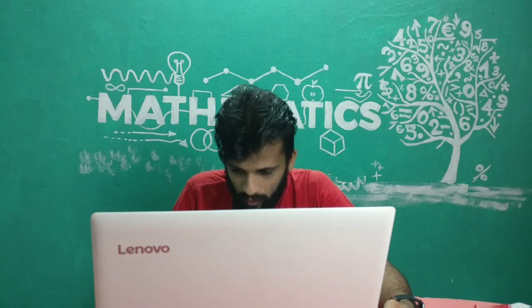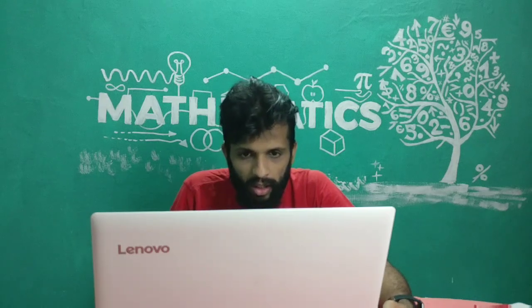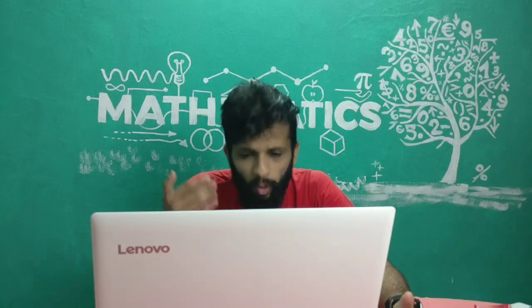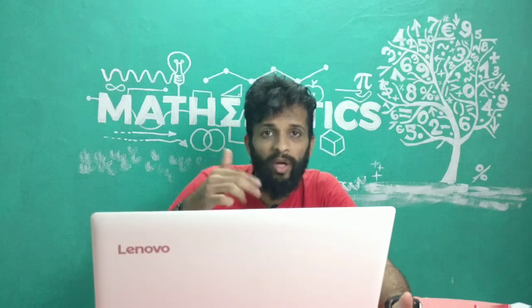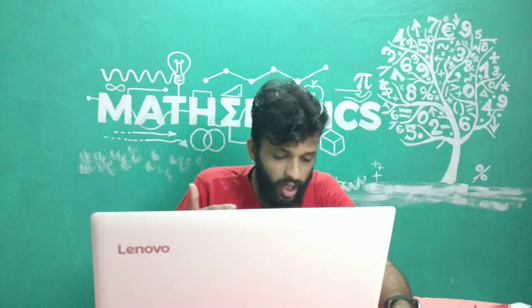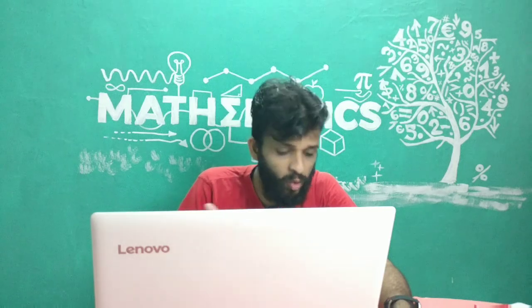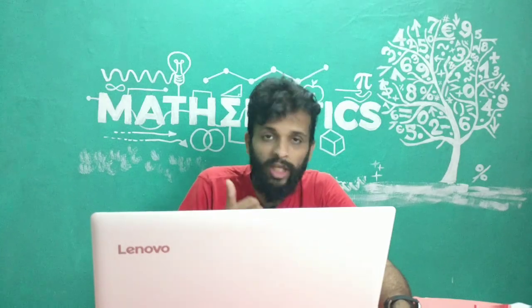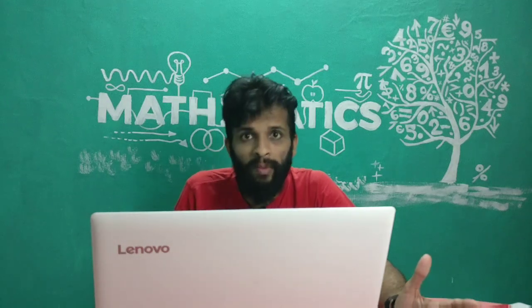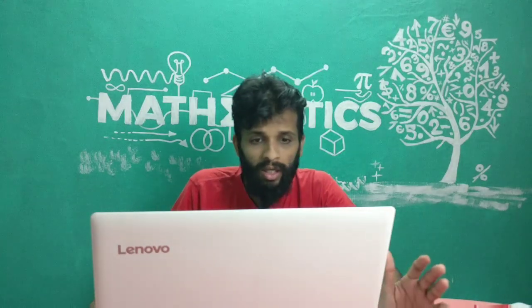Question 4d is about ogive curves — specifically a more-than type ogive. For the more-than type, subtract from the total to get cumulative frequencies: 30, 26, 20, 10, and 2. Then plot these against the lower class limits — more than 0, 20, 40, 60, 80 — on a graph to get your three marks.